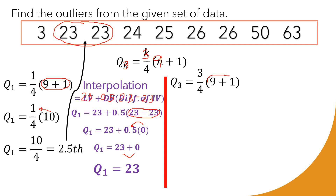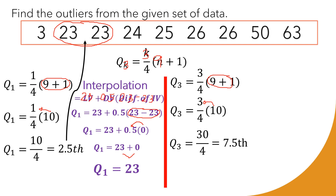Now we compute Q3. We change k to 3 while n remains 9. So Q3 = (3/4) × (9 + 1) = (3/4) × 10 = 30/4 = 7.5. This is not an exact value — 7.5 falls between the 7th and 8th values, which are 26 and 50.